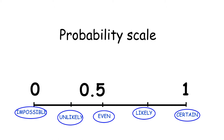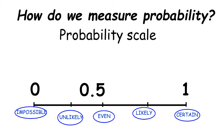We often use words like impossible when it's not actually true. When you say homework was impossible - no, it wasn't impossible, it was maybe quite difficult. Impossible means there is absolutely no chance. So be very careful about these words because we are using them in a mathematical context now.